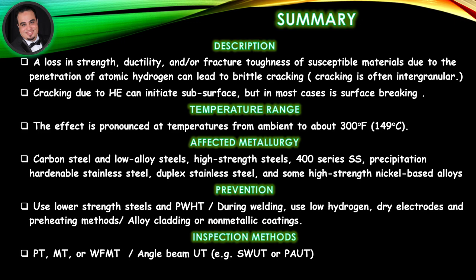Affected Metallurgy: Carbon steel and low-alloy steels, high-strength steels, 400 series, precipitation-hardenable stainless steel, duplex stainless steel, and some high-strength nickel-based alloys. Prevention: Use lower-strength steels and post-weld heat treatment. During welding, use low-hydrogen dry electrodes and preheating methods. Alloy cladding or non-metallic coatings. Inspection Methods: PT, MT, or WFMT; angle beam UT, SWUT, or PAUT.